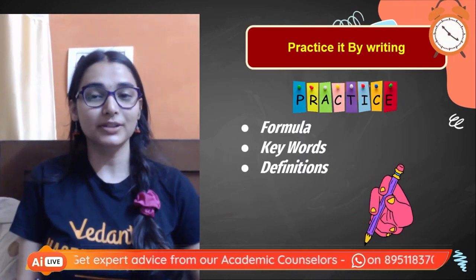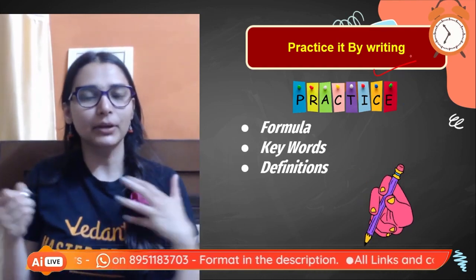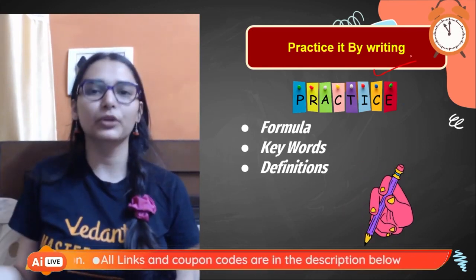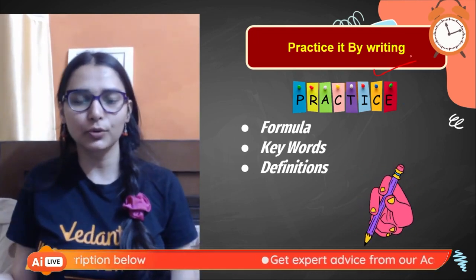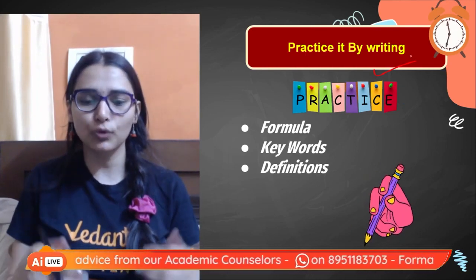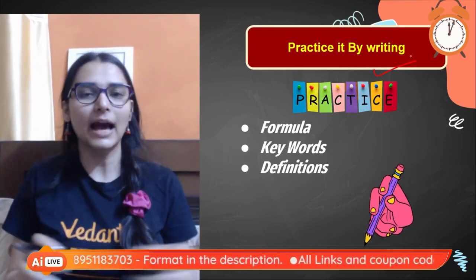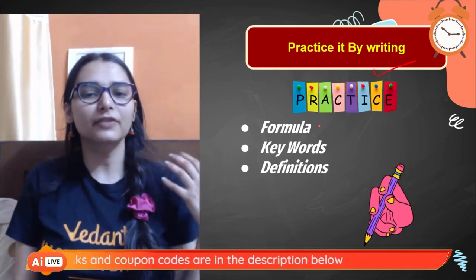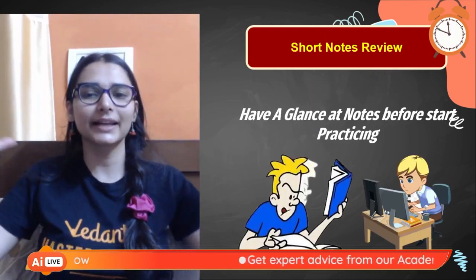The first tip is to practice by writing. I understand you don't have much time to write each and every word, but when I say practice by writing, you just need a sheet of paper and a pen or pencil. Whatever is important — say you are drawing isomers — don't just read them, draw them with your hand. If you are revising periodic properties, write the trend in a tabular form. Always have pen and paper handy, and revise formulas, keywords, and definitions by writing so things retain in your mind for longer.